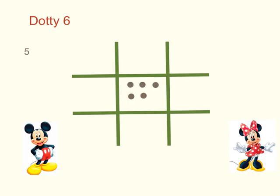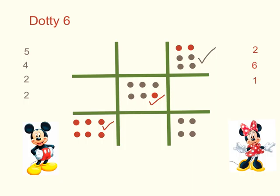Mickey rolled a 5 and put 5 dots in the middle. Minnie rolls a 2. She can't fit them in the middle, so she puts them in the corner. Let's watch the game progress. And so Mickey's the winner because he's the first to get 3 in a row.